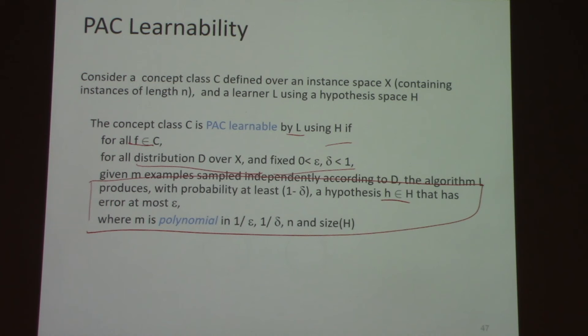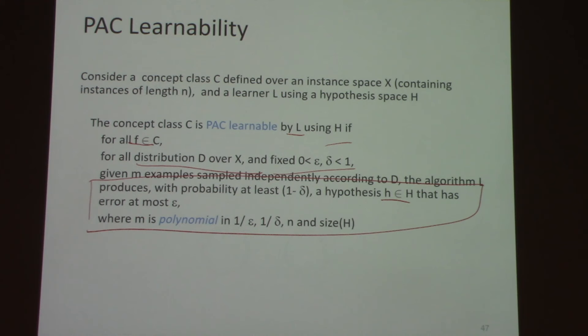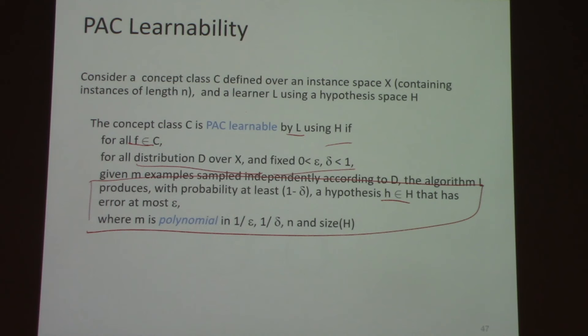To put it very loosely: if for every function in the concept class, with only a small number of examples, there exists a learning algorithm that can give you a good enough classifier most of the time, then the concept class is called PAC learnable. 'Small enough' means polynomial in the size of the hypothesis class and 1 over epsilon and 1 over delta. Notice I'm not saying anything about the learning algorithm — all we require is that there exists an algorithm.